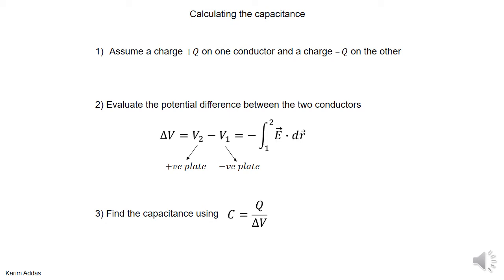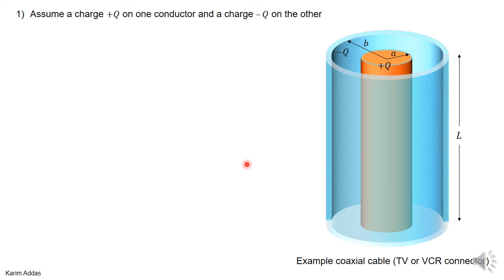In this video we want to find the capacitance of a cylindrical capacitor. We're going to follow the same route that we did for the parallel plate capacitor: we assume a charge plus Q on one conductor and a charge minus Q on the other, we find the potential between the two conductors, and from this expression we'll be able to find Q over delta V to get the capacitance.